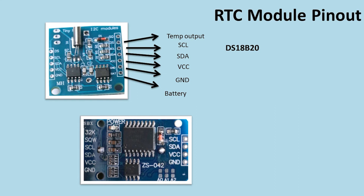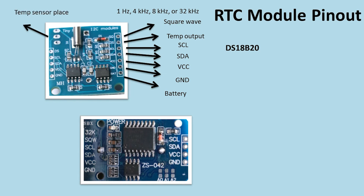When you connect the temperature sensor and use it in a project, the temperature data is available alongside the RTC time and date. Another pin is SQW — the square wave output — which provides 1 Hz, 4 kHz, 8 kHz, or 32 kHz signals. You can use it as a signal generator at those specific frequencies.